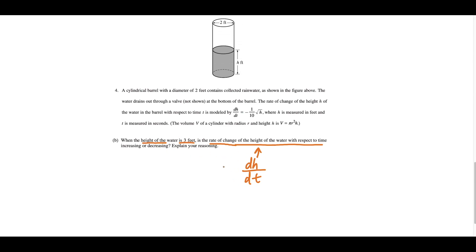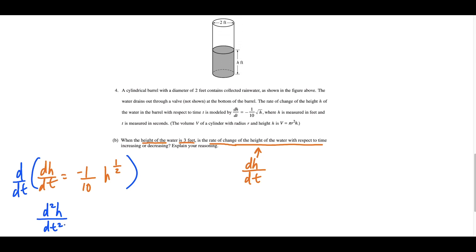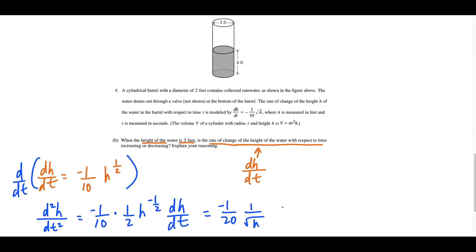To answer that we take the derivative of dh/dt. Starting with dh/dt equals negative 1 over 10 times h to the 1/2, we differentiate with respect to time. The second derivative d²h/dt² equals negative 1 over 10 times one-half times h to the negative 1/2 times dh/dt (chain rule). Combining the constants gives negative 1 over 20 times 1 over √h, and substituting dh/dt equals negative 1 over 10 times √h.